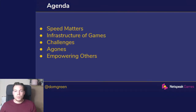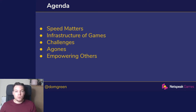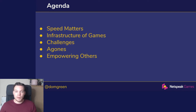We're going to talk about why speed matters, especially for free-to-play online games. We're going to look at the infrastructure of games and what the component parts are that make it up. And then when we look to use Kubernetes, what were the challenges? Thankfully there was a solution — Agones, an open source project — and also how we can use open source and Kubernetes to empower others within the studio to help them build the game faster.